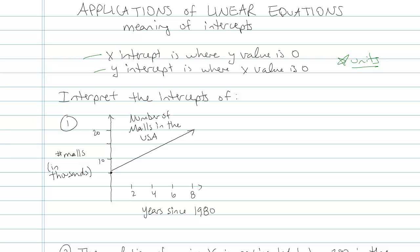So it says, interpret the intercepts of a problem when we're given a graph. The title is Number of Malls in the United States. And by the way, I should say that I made this stuff up, so don't trust me on this.